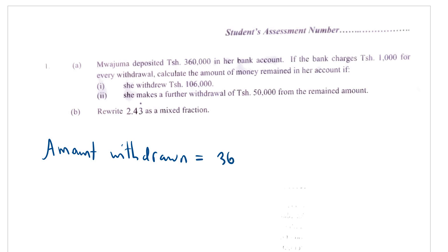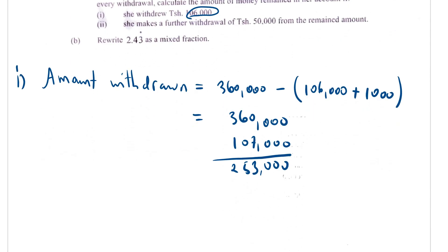Amount withdrawn, we are going to take 360,000 shillings, subtract the amount she withdrew, that is 160,000 shillings, but also we add the bank charges. So you're taking 360,000, subtract 107,000 shillings. So you have 253,000. As you can see, this is amount remained, because we are supposed to find the amount remained in her account. So amount remained will be 253,000 shillings.